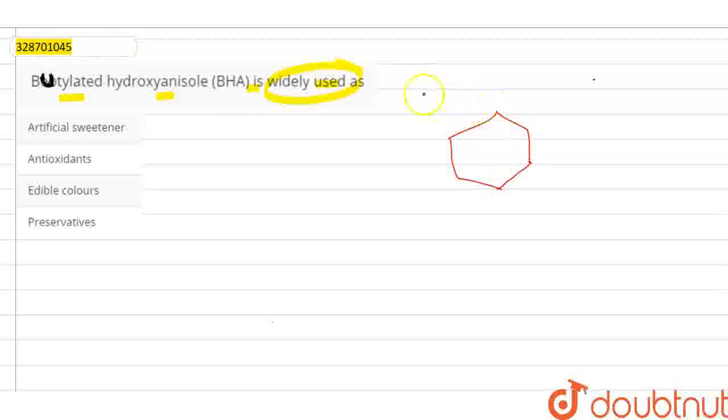First of all, we need to know what we need to do. This has hydroxy - for hydroxy, OH. It's called anisole. Anisole is a benzene ring with OCH3. It's also called butylated.